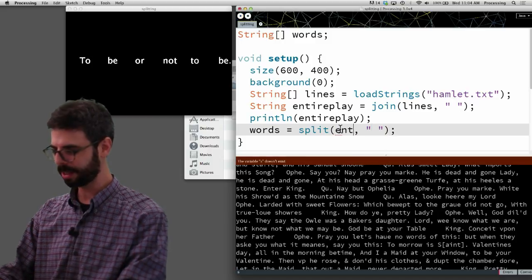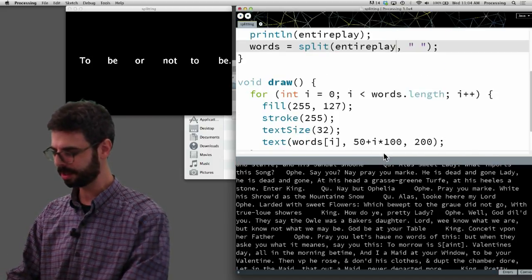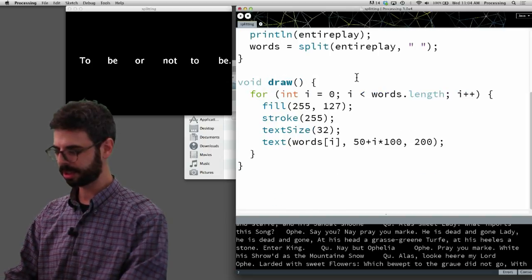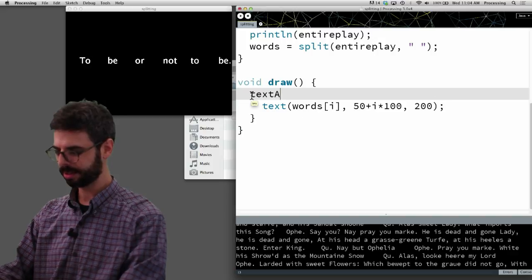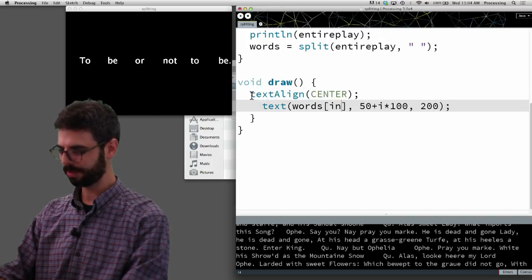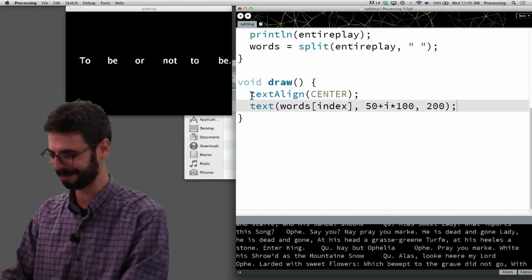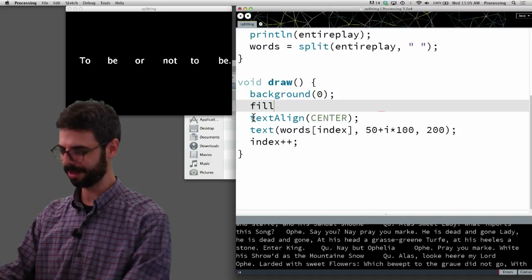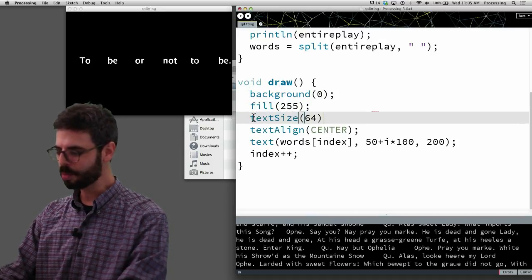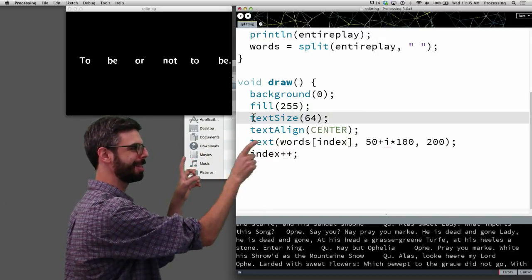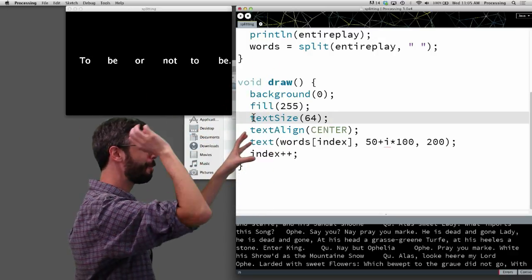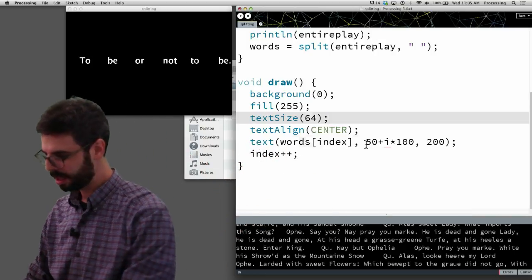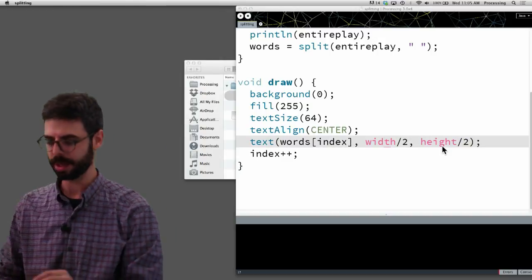So let's take this out. And I'm not splitting up s anymore. I'm splitting up entire play. And let's do something slightly different. Let's keep track of an individual index. And let's just display, I'm going to say text align center words. And I'm going to say index plus plus. Background 0, fill 255, text size 64. So I just really quickly in here put a little algorithm to display a single word at a time. Like we split up that whole play which probably has thousands of words in it. And we're going to look at each word one at a time, every time through draw.